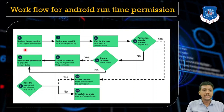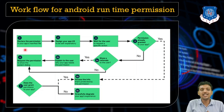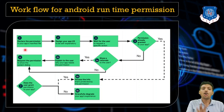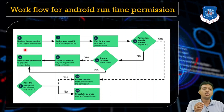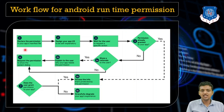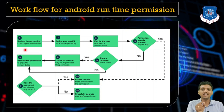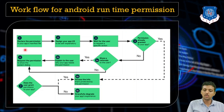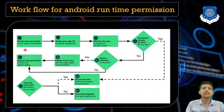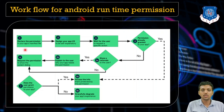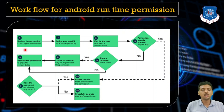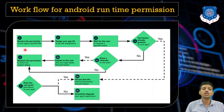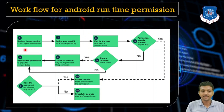Step two: design your app UI in a self-explanatory way. For example, a button labeled 'ask for camera permission' — when clicked, it should show a pop-up or some indicator explaining why the permission is needed and what permission is being requested from the user.